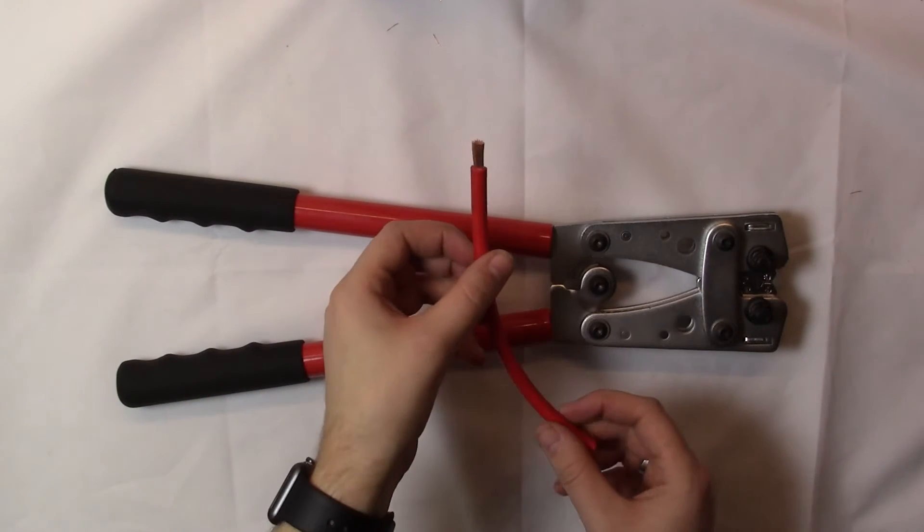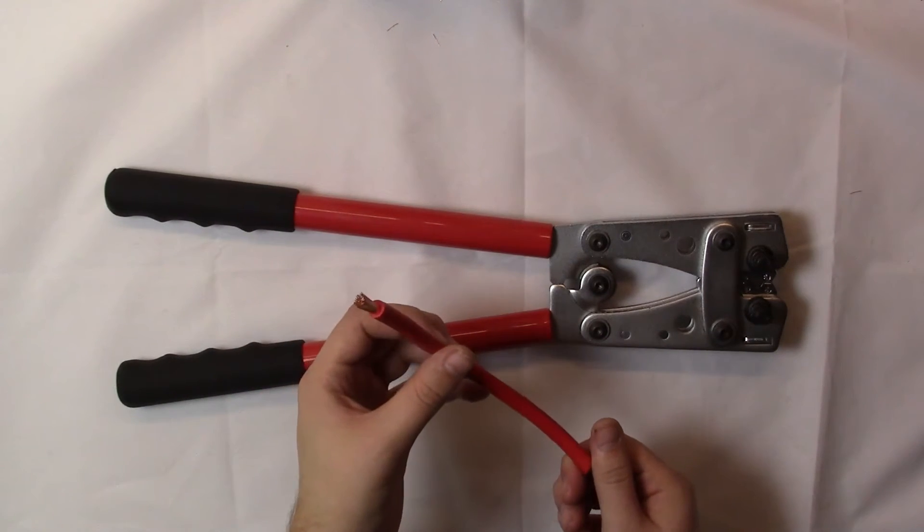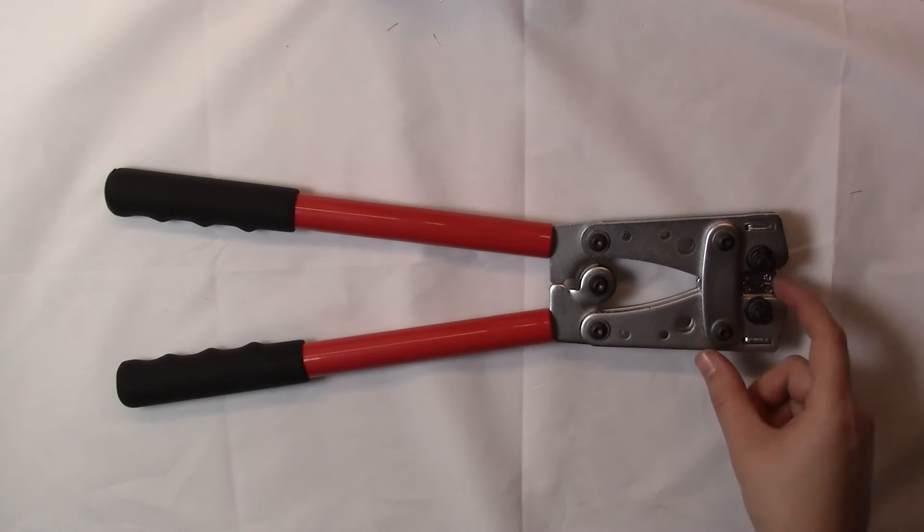Here you can see our hexagon crimping tool. With larger cables such as the 16mm² cable you can use the hex tool. However what we have found is that you are probably best choosing a different size than the size of the cable you are using. So with the 16mm² cable we are going to be using the 10mm² size.